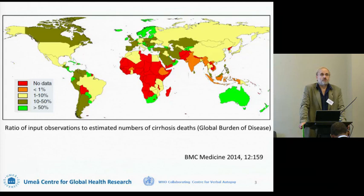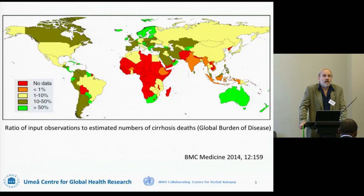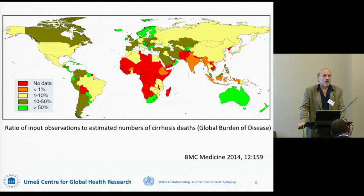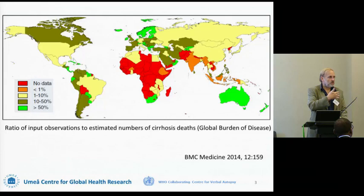Just a couple of examples of how difficult some of this stuff is. This is actually some work that Global Burden of Disease did on cirrhosis deaths, and the colors are not the numbers of cirrhosis deaths — the colors are the availability of actual data on cirrhosis deaths fed into the estimates. Africa comes out pretty much red, meaning no data. Although cirrhosis deaths were modeled for every country including those red ones, there were actually no cirrhosis mortality data available for a huge swathe of the poorest countries in the world.